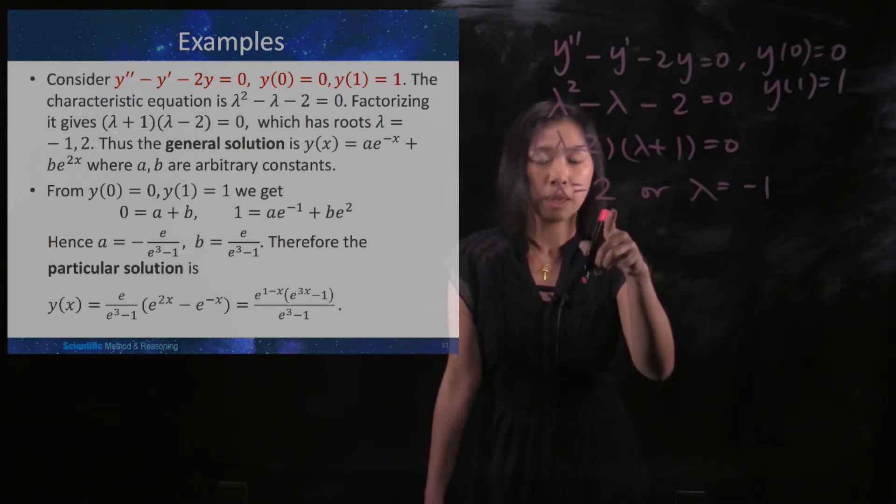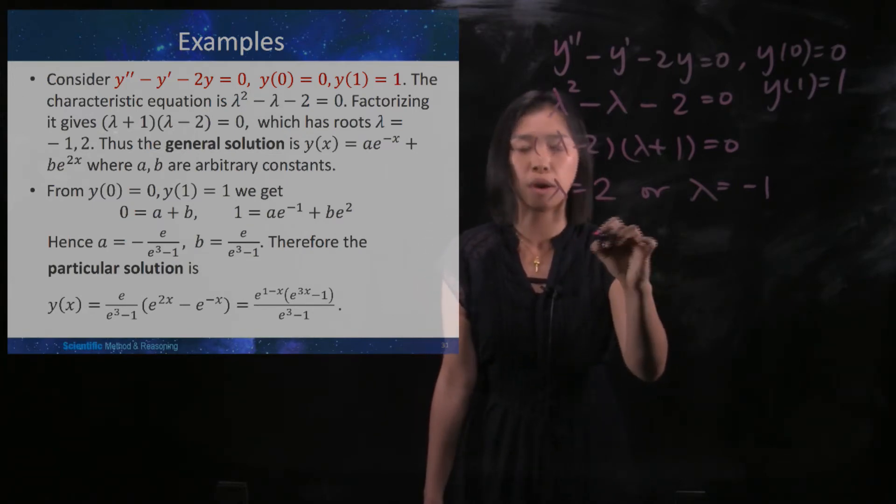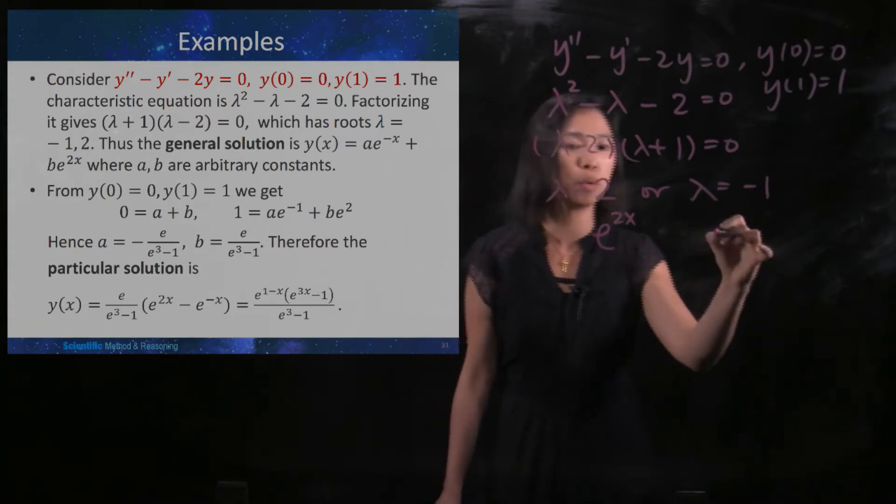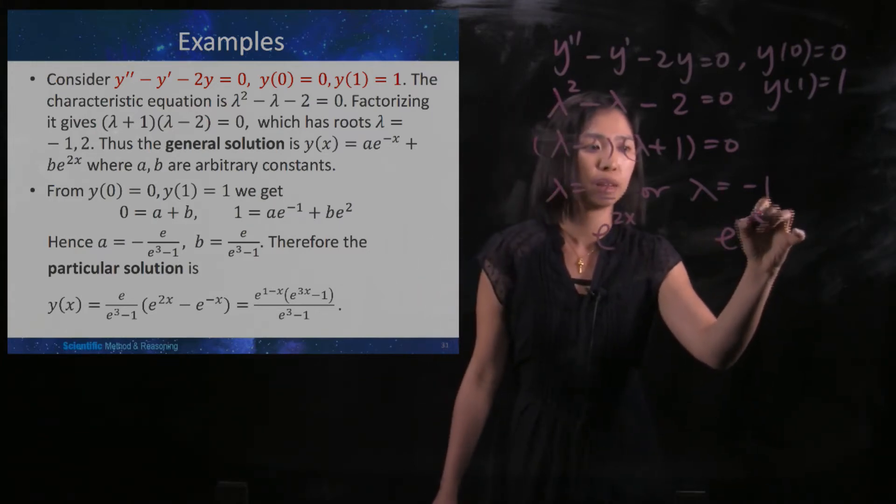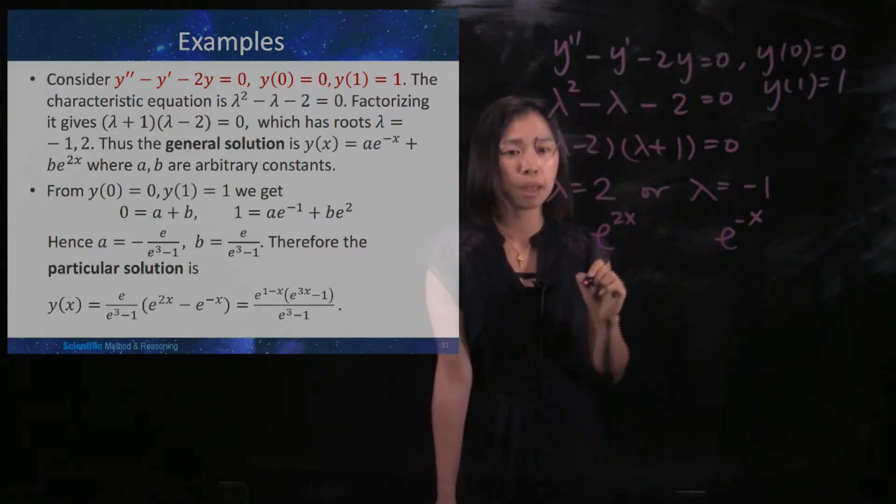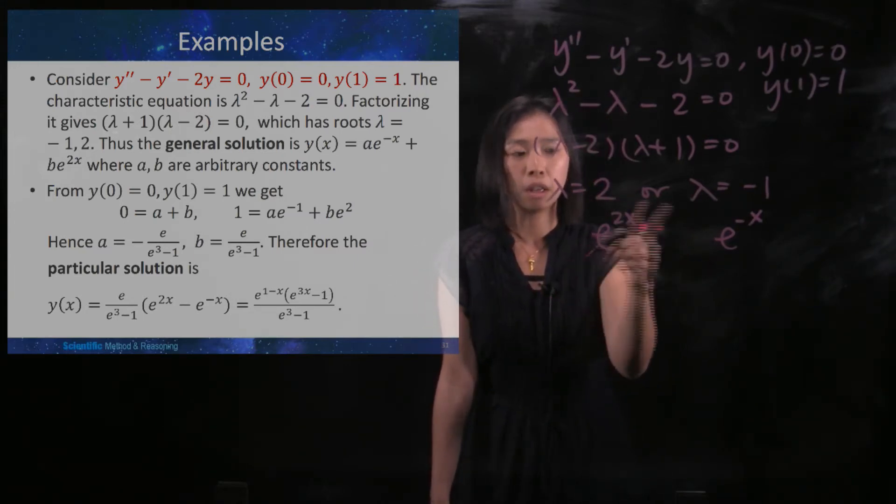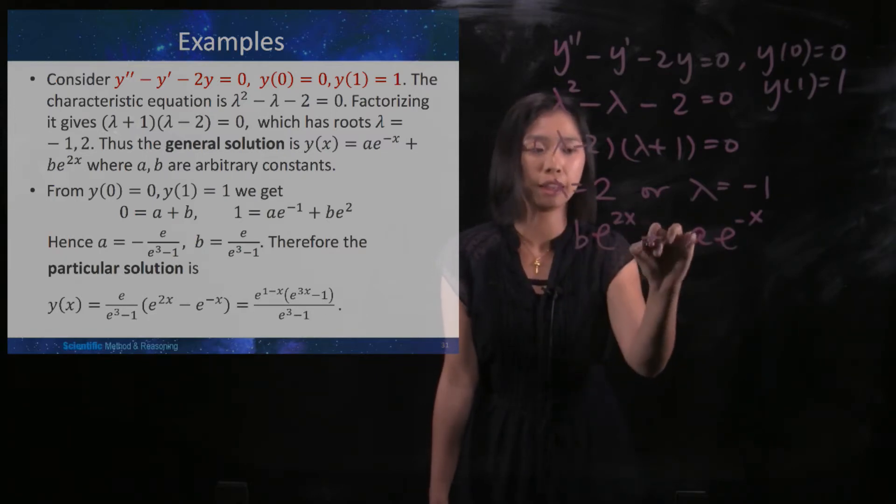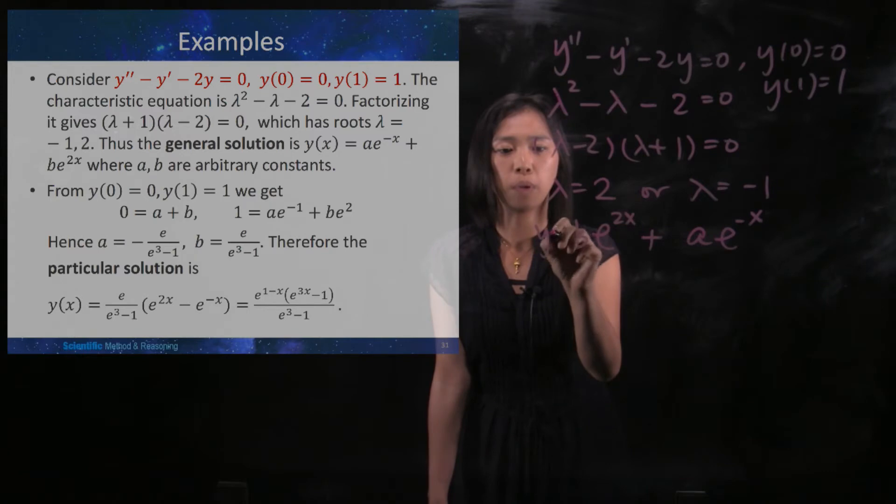Corresponding to this term, you will have e^(2x). And then corresponding to this term, you will have e^(-x). And then maybe I multiply them by a constant term, maybe that is your a and that is your b. And then I add them up together and put a y here.